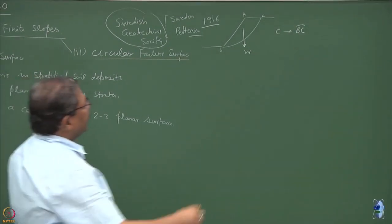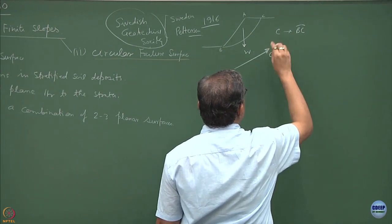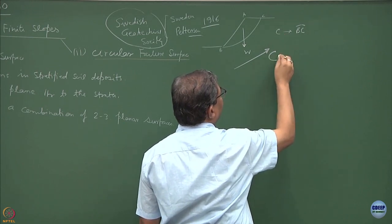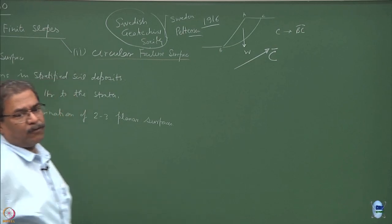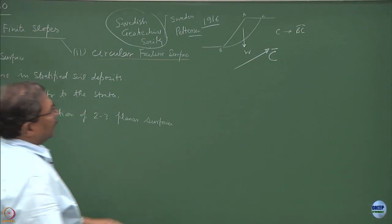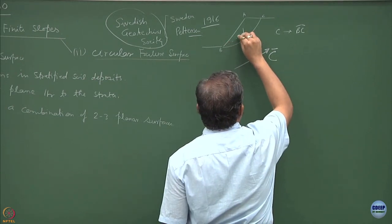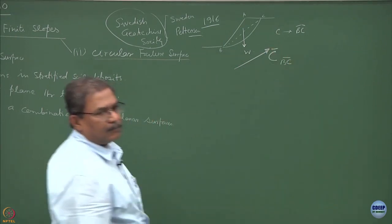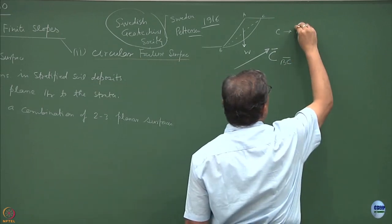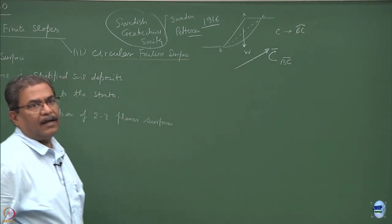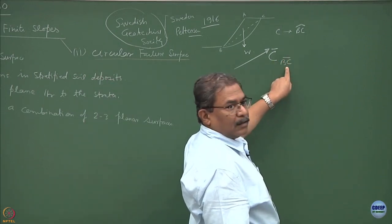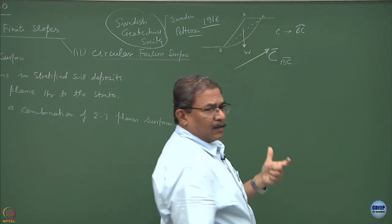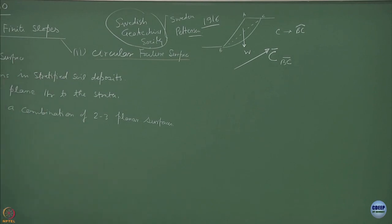I will use capital C here as the force. The direction of C is always taken as parallel to the chord BC. The direction of C is assumed to be parallel to BC, so one unknown is less - the direction is known, magnitude is not known.